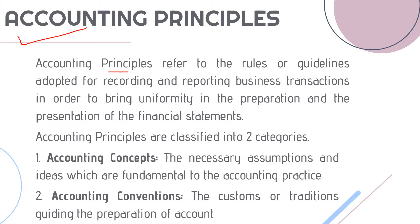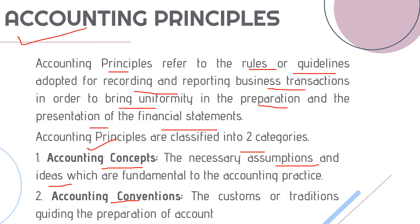These principles are rules or guidelines which we adopt to report and record business transactions so that it brings uniformity while preparing and presenting financial statements. The accounting principles are of two categories: accounting concepts and accounting conventions. Concepts are assumptions and ideas, while conventions are customs or traditions followed while preparing the financial statements.